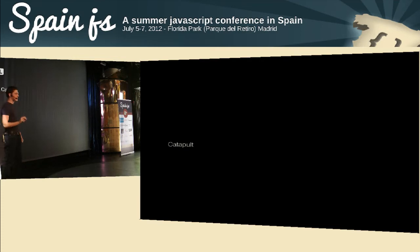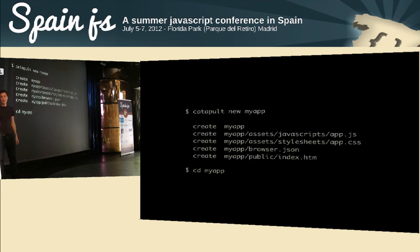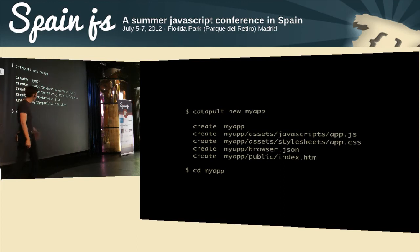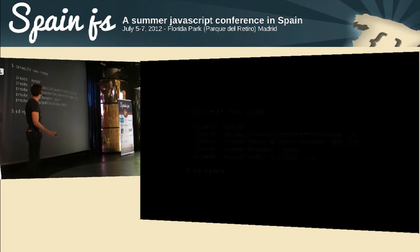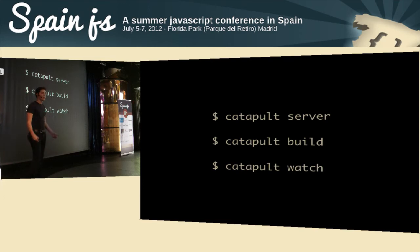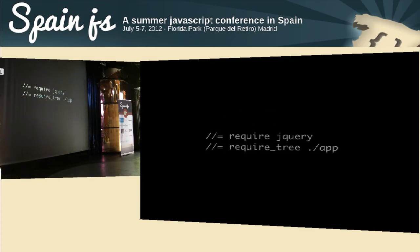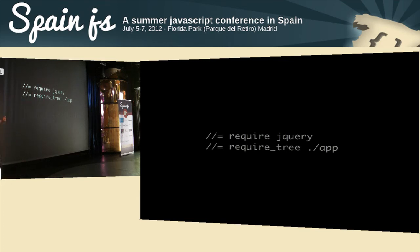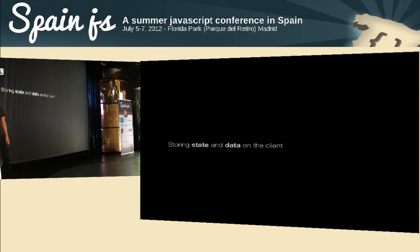Catapult is a little Ruby gem — `gem install catapult` — for compiling templates. I personally use Sinatra rather than Rails, so Catapult fits my workflow better. You can generate a new application, it creates a bunch of files, then you can run a server, build to disk for production, or watch for changes. It uses Sprockets, so you can add meta-comments like `require jQuery` or `require_tree` — familiar if you know Rails. Compiling apps and templates is a solved problem.